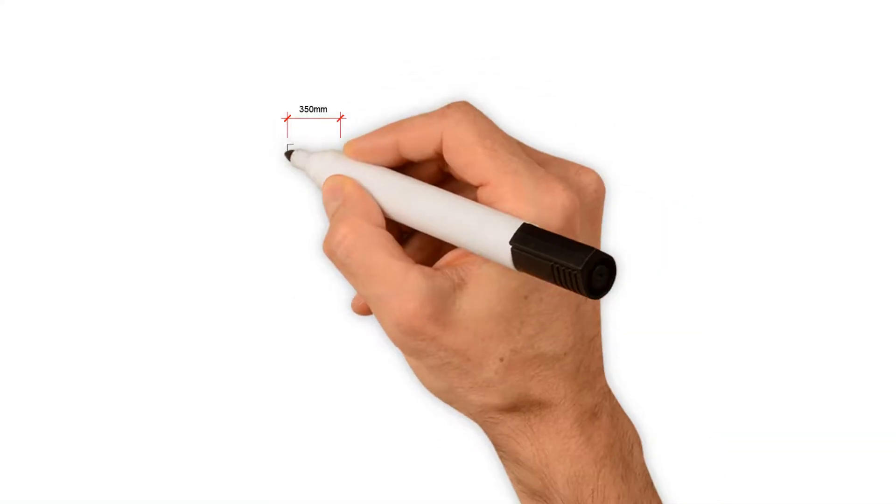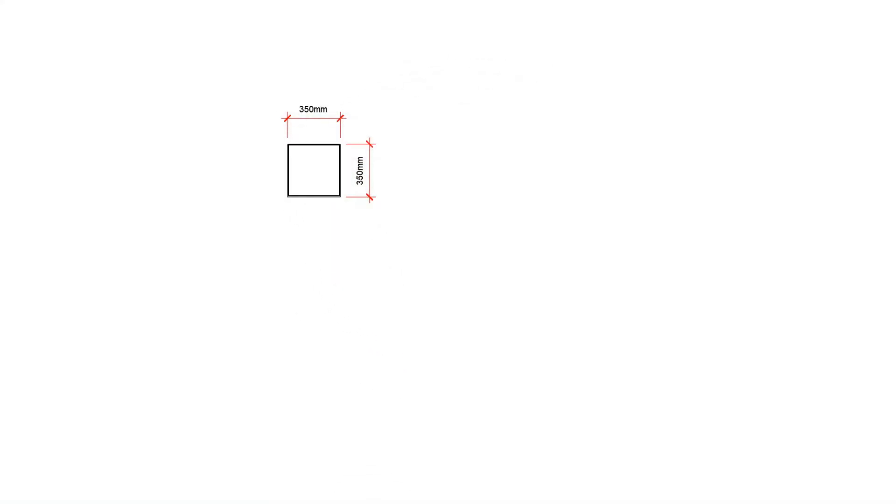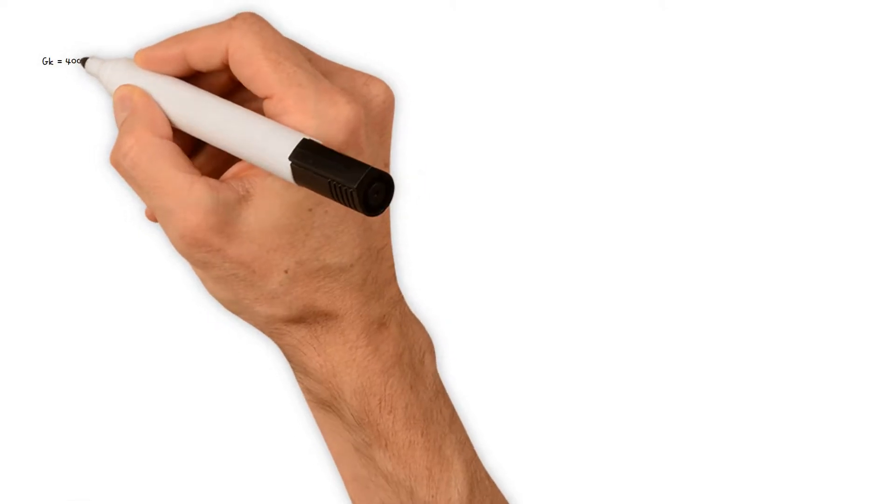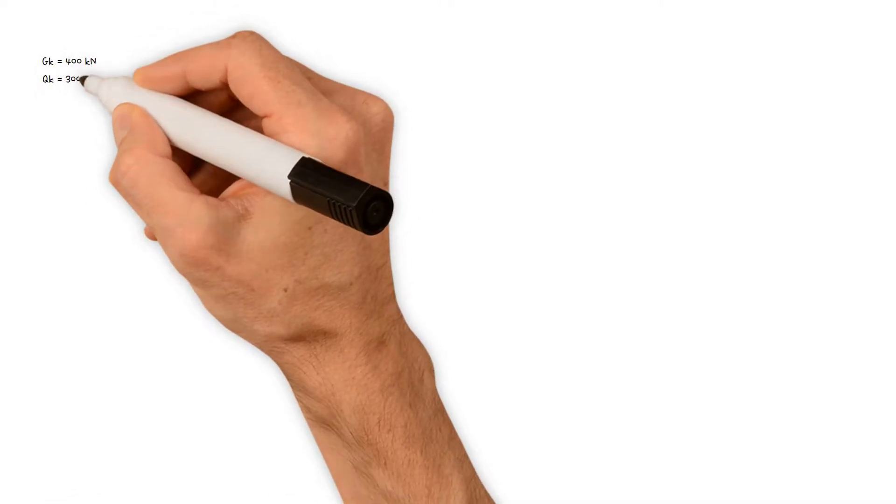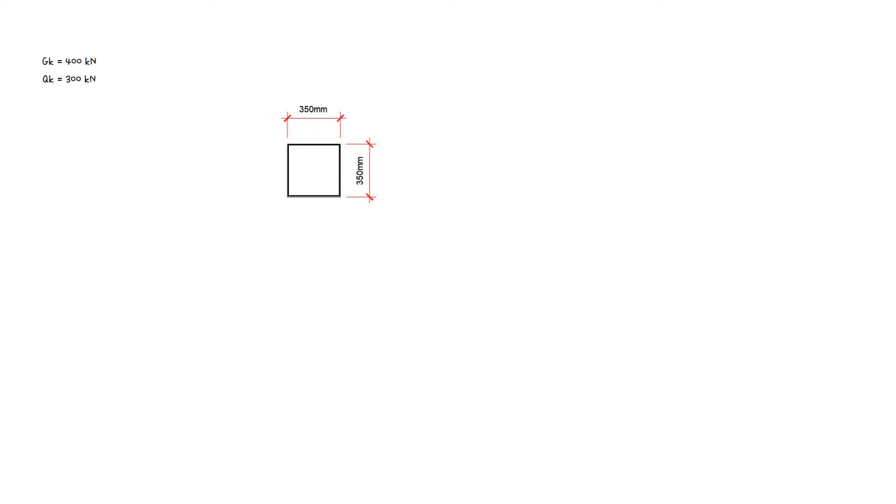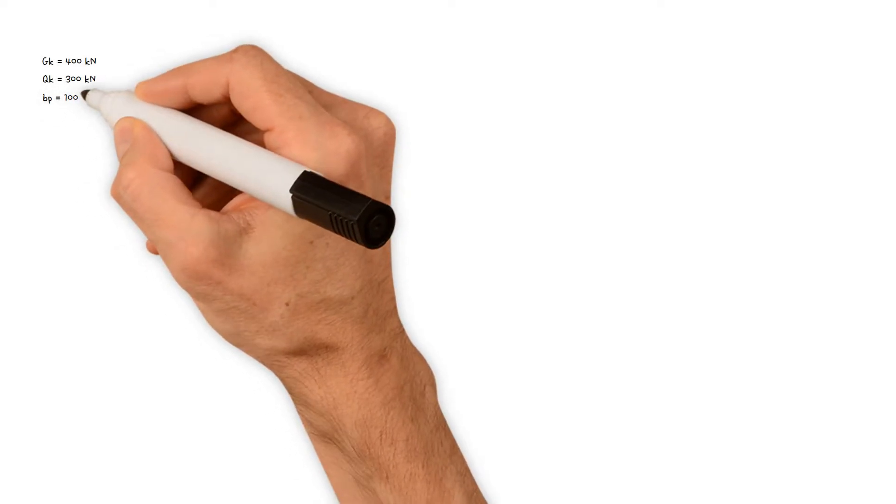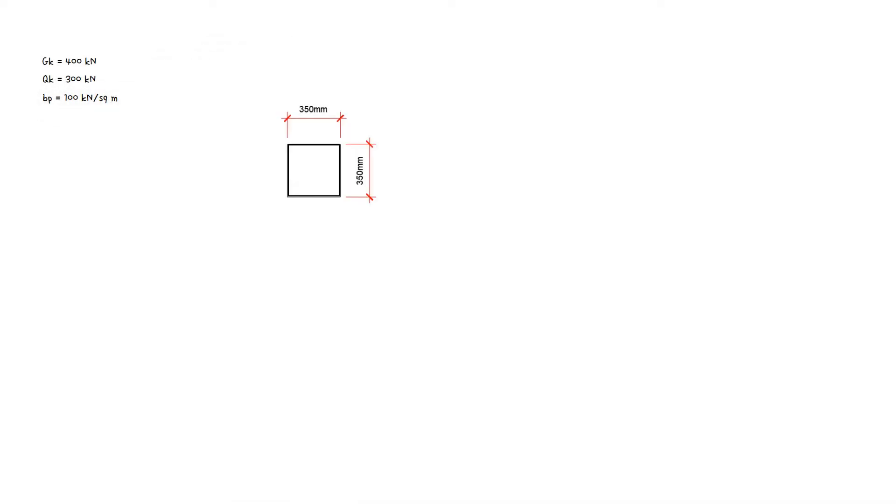A 350 mm square concrete column supports a dead load of 400 kN and an imposed load of 300 kN. Assuming a permissible bearing pressure of 100 kN per square meter, how can we find suitable pad foundation dimensions?